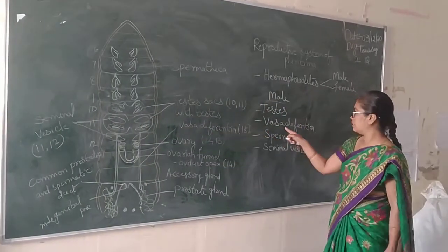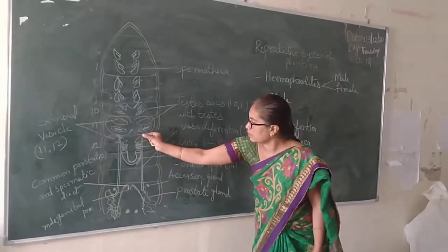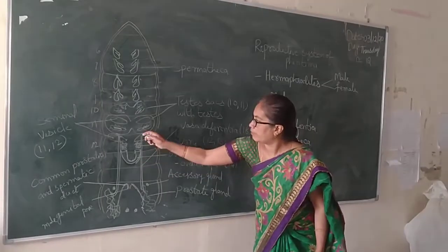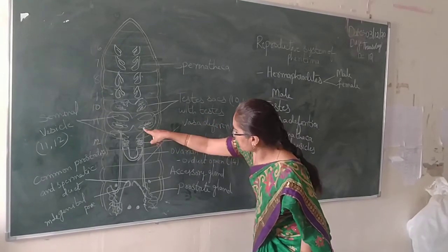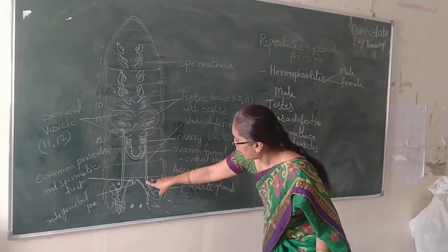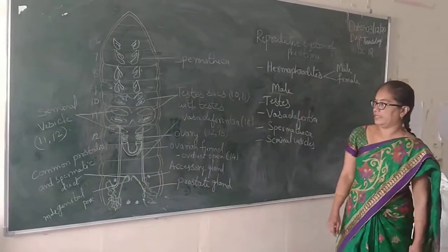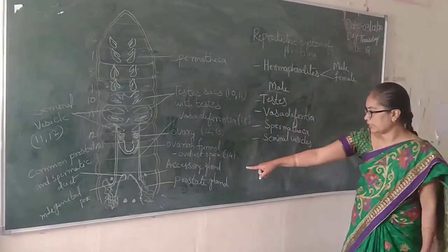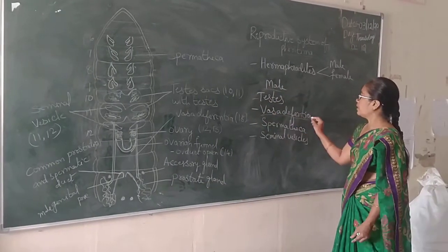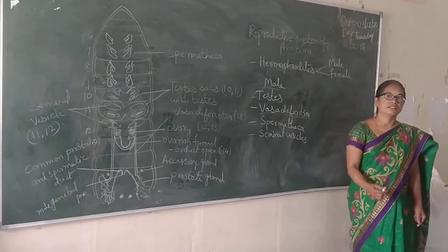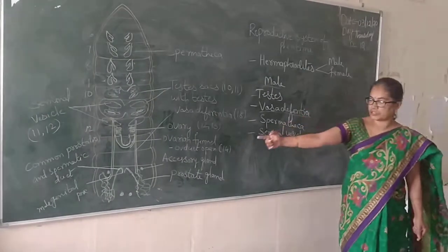Next, Vasa Deferencia. Vasa Deferencia is a tubular structure which starts from the testis and testis sacs and extends up to the 18th segment, where they open into the prostate gland. The function of Vasa Deferencia is to transport the sperms into the prostate gland.